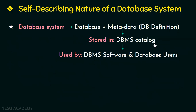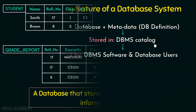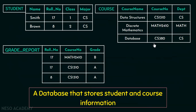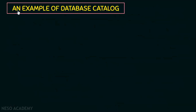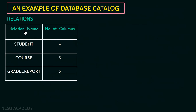Let us see an example of a catalog so that you understand better. In the previous video we took a simple example of a university database that stores student and course information. So based on that example, let us see an example of a database catalog. Here we will see a catalog where relation or table names along with the number of columns are mentioned. In our university database we have three tables: the student table with four columns, the course table with three columns, and the grade report table with three columns.